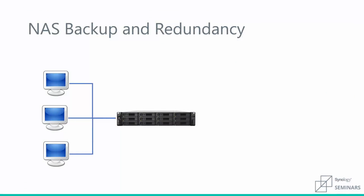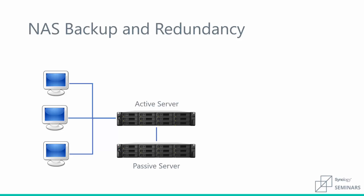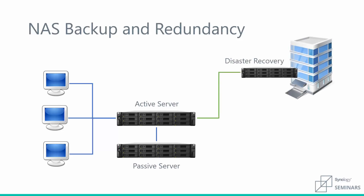In this diagram we're looking at our company's file server — the spot where everyone is storing and accessing their files on the network. One of the best things we can do for a file server is add local redundancy by implementing a high availability server cluster. Next we'll look at disaster recovery, having an off-site copy of your data which you'd be able to restore to in the event of a critical data loss at your company.